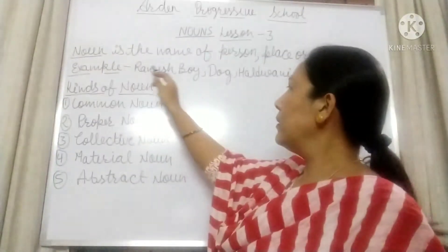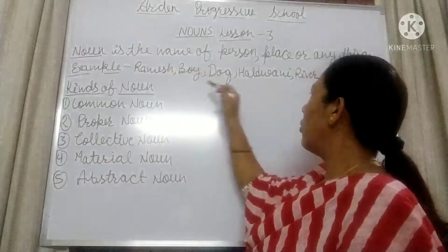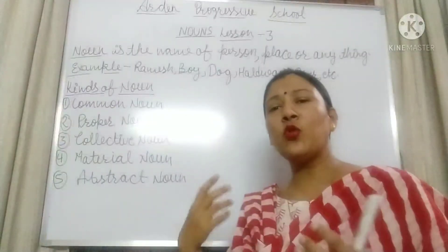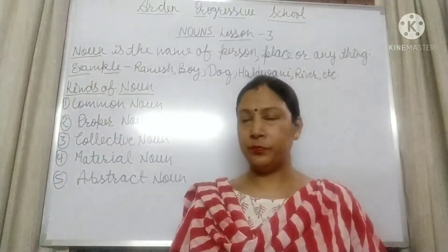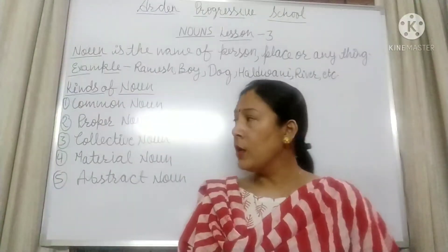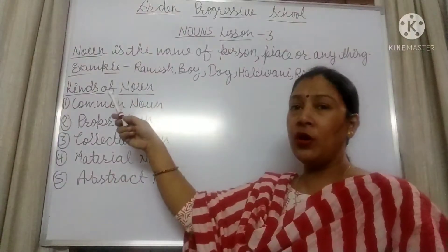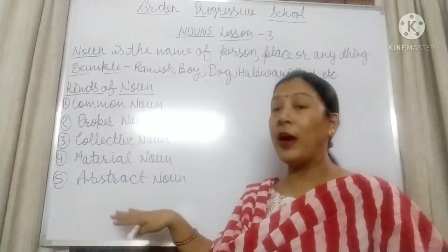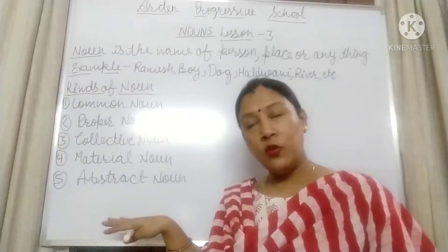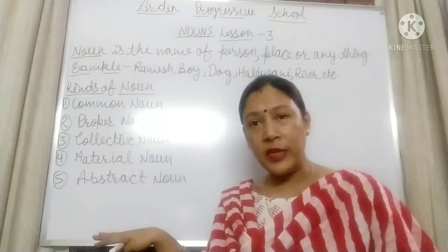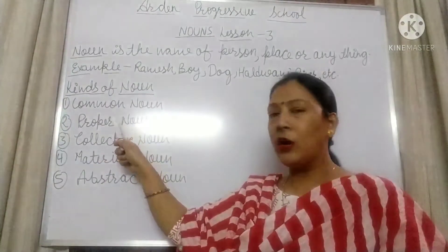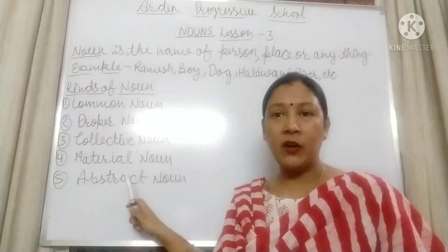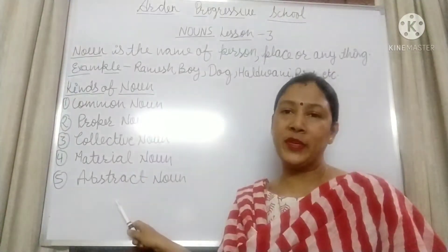Here are some examples: Ramesh, ball, dog, Haldwani, river, etc. And there are so many more examples of noun. It is important to know what are the kinds of noun. There are five kinds of noun: common noun, proper noun, collective noun, material noun and abstract noun.